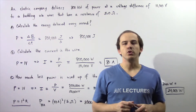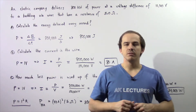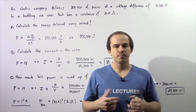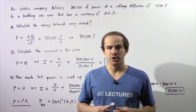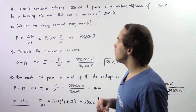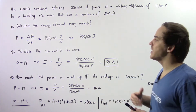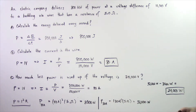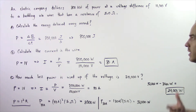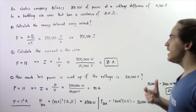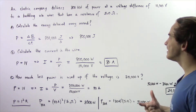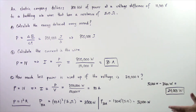Let's look at the following example that will deal with electric power output. An electric company delivers 800 kilowatts of power at a voltage difference of 10,000 volts to a building via wires that have a resistance of 5 ohms.